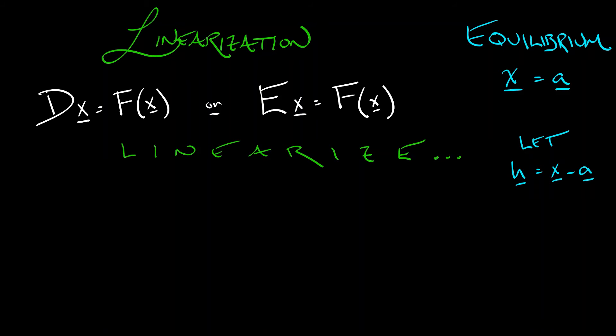That is h equals x minus a. And then what we want to know is, thinking about that h as a perturbation, how does the perturbation evolve? In continuous time, we would be looking at dh. Well, what is that? By definition, that's d of x minus a. Since d is a linear operator, that gives us the derivative of x minus the derivative of a. But since a is an equilibrium, its derivative is zero.